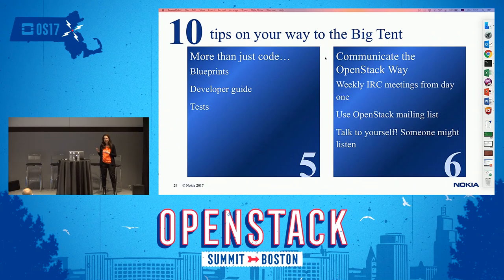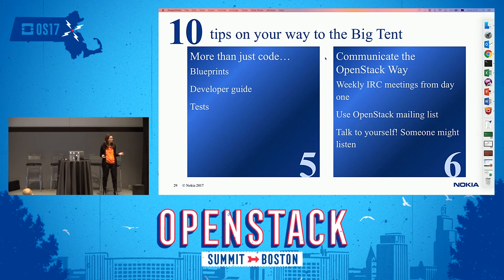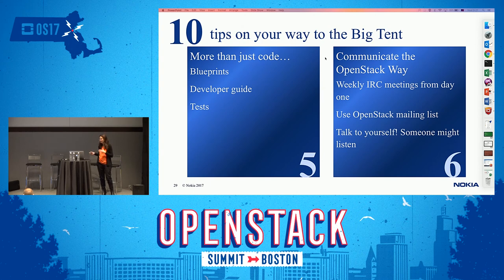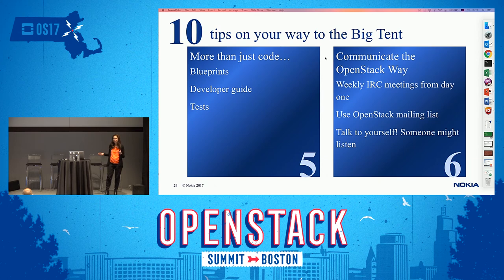The developer guide is one type of documentation in OpenStack — there is also a user guide and an installation guide. The developer guide is meant for developers trying to use your project. If you don't have good documentation they will have a hard time, and it's in your interest to help other people get involved as easily as possible. Writing documentation is not fun, but it's extremely important. Tests are similar — not fun to write, but you need unit tests and integration tests. Especially as the community grows and people you don't know start contributing code, you need good tests at the gate so that if the tests pass, the code is probably okay.